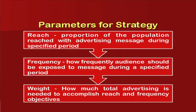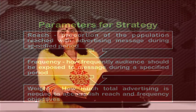The parameters for designing the strategy basically depend on reach, frequency, and weight. Reach is the proportion of the population reached with advertising messages during a specified period. Frequency is how frequently audiences should be exposed to the message during a specified period — one time a day, two times a day, or seven times per week. Weight is how much total advertising is needed to accomplish reach and frequency objectives; it is the result of multiplying reach into frequency, and depends on the budget and the objective.